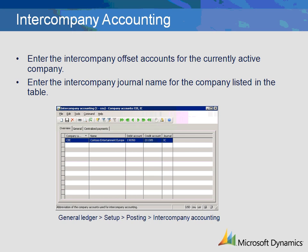The intercompany accounting option in the General Ledger is used to identify the journal and the intercompany accounts to be used for processing intercompany transactions. List each company that the currently active company will process transactions with. Enter the intercompany offset accounts for the currently active company — in this example, Company CEU is our active company. Enter the intercompany journal name for the company listed in the table — in this example, Company CEE is the company listed in the table. This setup must be completed in each company that will be processing intercompany transactions.